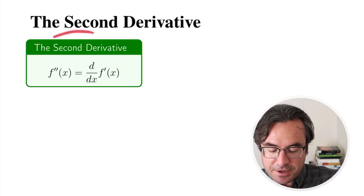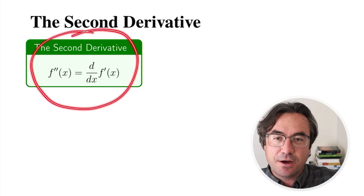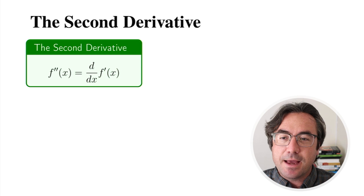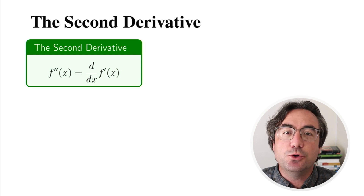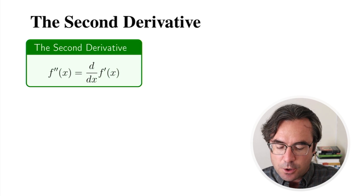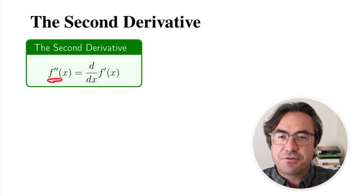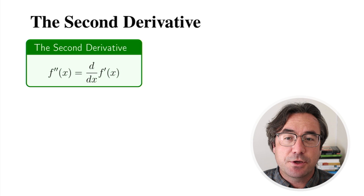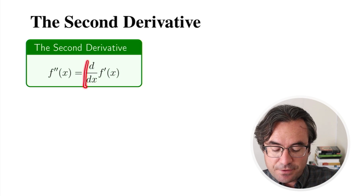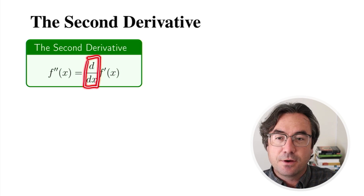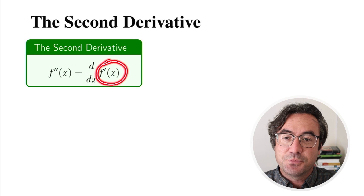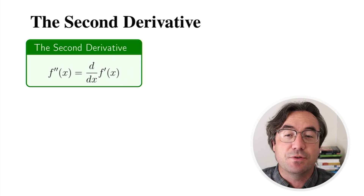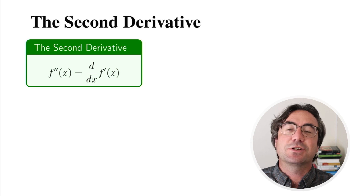We have here the definition of the second derivative of a function. The name we give this new type of derivative, we call it f double prime. So how do we calculate this thing? It's the derivative of the derivative — the derivative of the first derivative — and we get our second derivative.